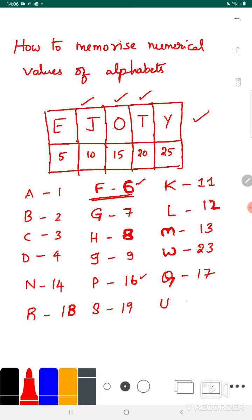U - as per the Government of India, you are considered youth at age 21, so U is 21. V for victory - in the victory symbol, you show two fingers, so V is 22. W as 23 is already done.